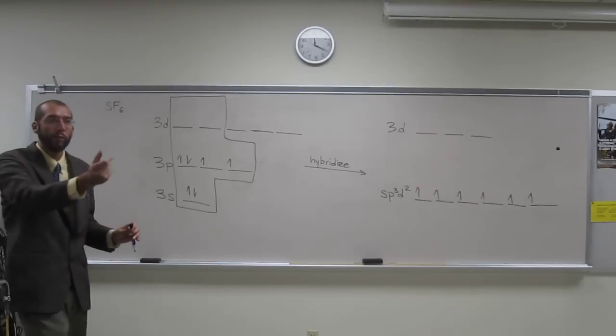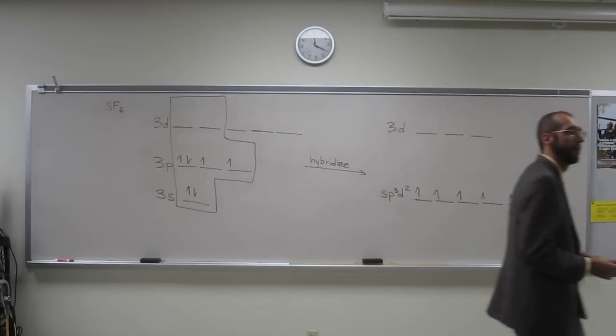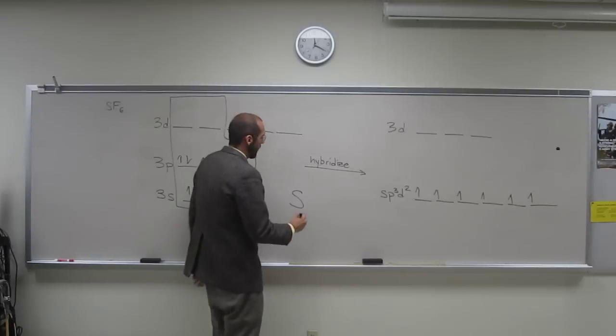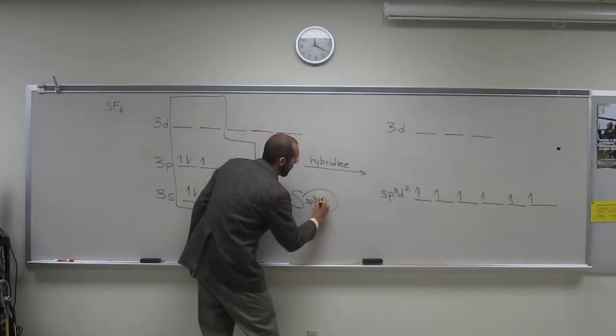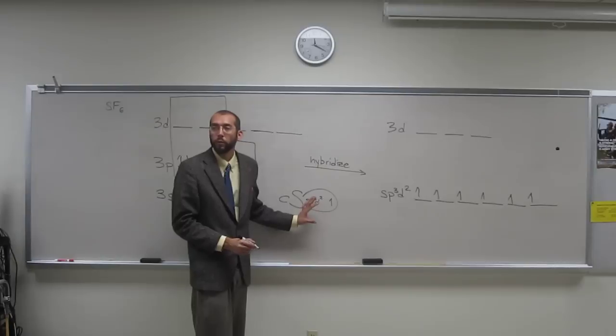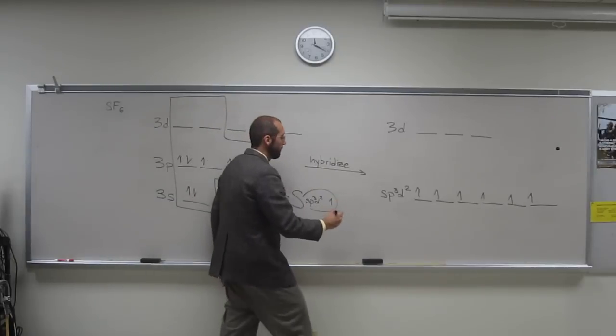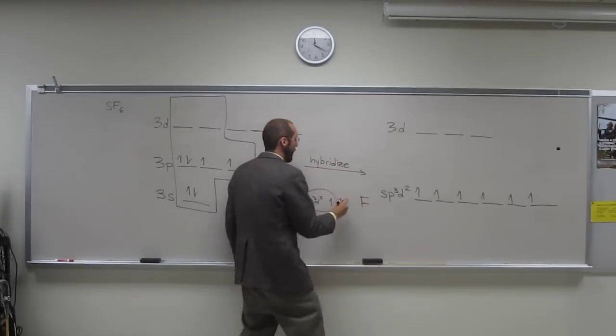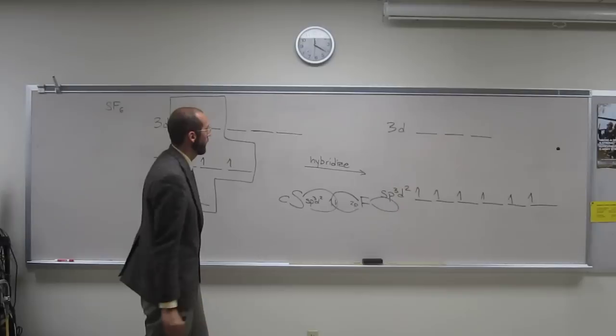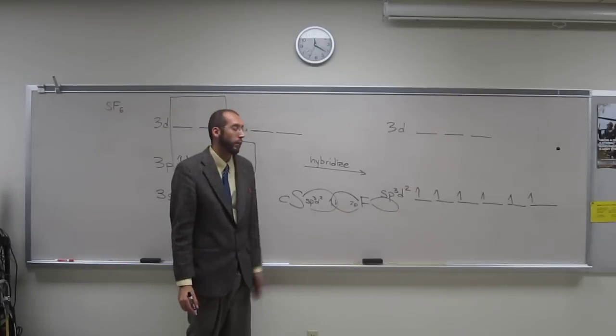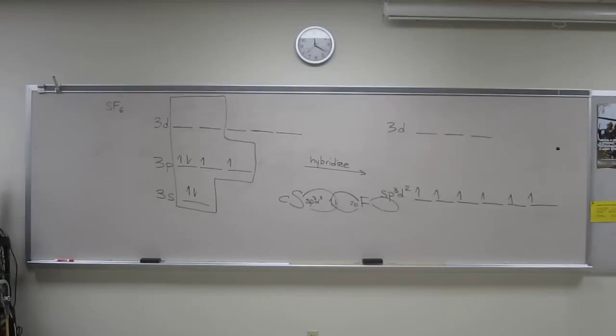Because in this case, all of those, all of them are bonds. And it's sp3d2 orbital. And this happens with all six of them, of course. I'm just going to show one of them, because it gets kind of an F with its 2p orbital. So there's your overlap. So that's the 2p orbital is bonding with the sp3d2 orbital.